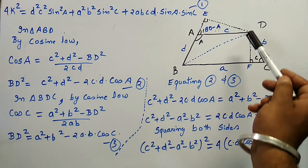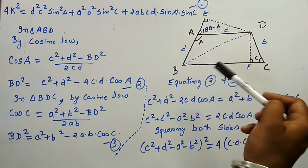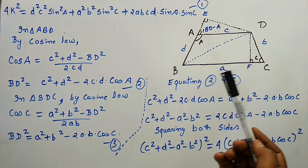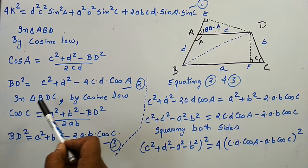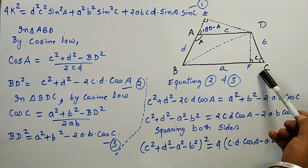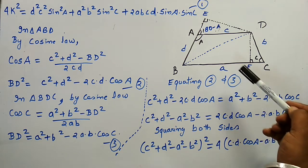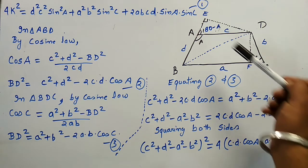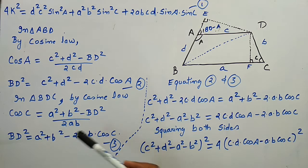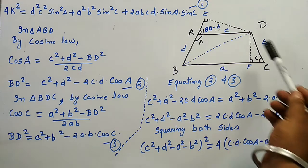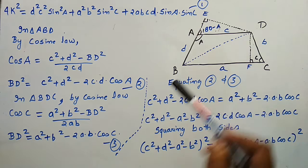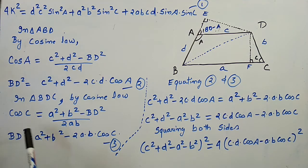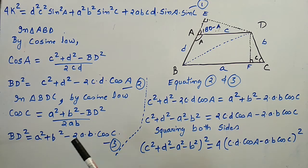Also in triangle BDC, applying the cosine law we get cos C equals (A² + B² − BD²) divided by 2AB. From here we can also calculate BD², and BD² equals A² + B² − 2AB·cos C.